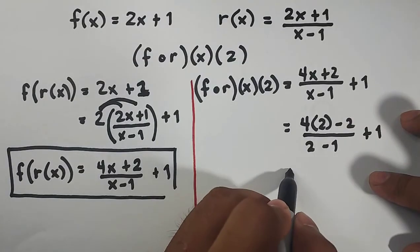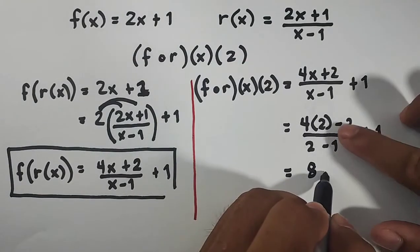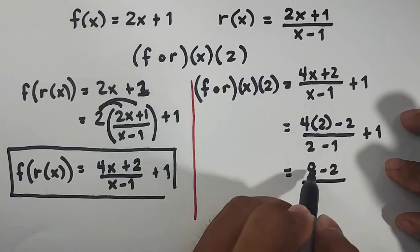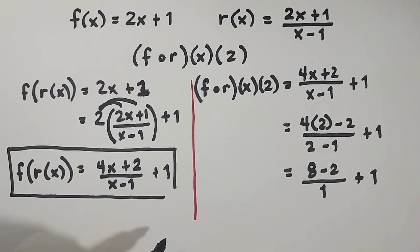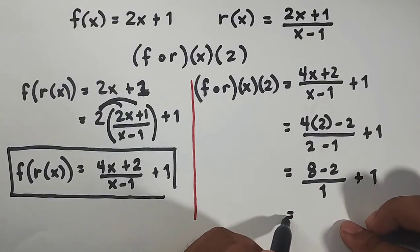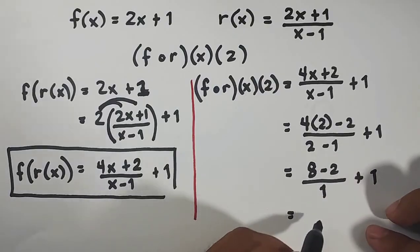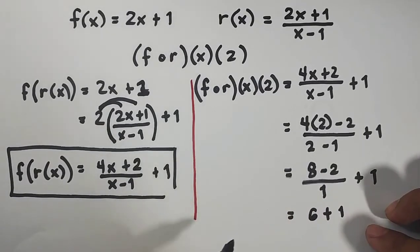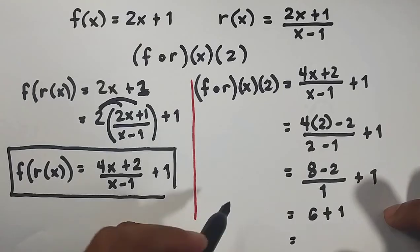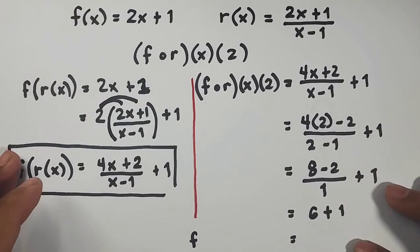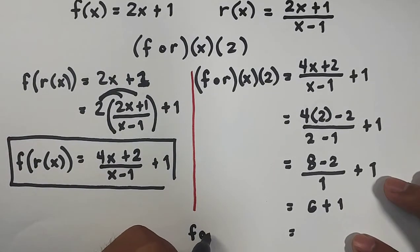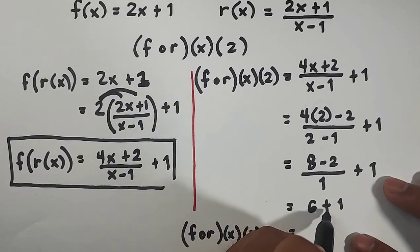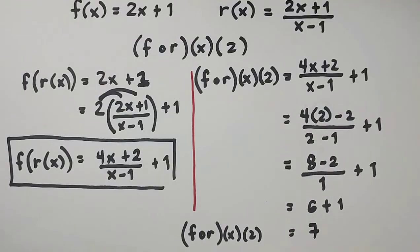Simplify your numerator. 4 times 2 is 8 minus 2 over 2 minus 1 that is equal to 1 plus 1. Simplify. This is 8 minus 2 is 6 divided by 1 that is 6 plus 1. Meaning, your f of r of x of 2 is equal to 6 plus 1 which is equal to 7.